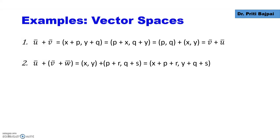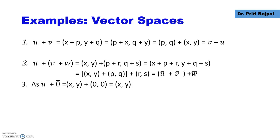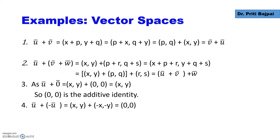All four group properties also hold. The commutative law: U+V or V+U both give us the same point. In associative law, whether we add V and W first and then add U, or add U and V first and then add W, the end result is the same. The additive identity is naturally (0, 0), because when we add it to our vector (x, y), we get the vector (x, y) back. The additive inverse of U is −U, because when we add (x, y) and (−x, −y), we get the additive identity (0, 0).